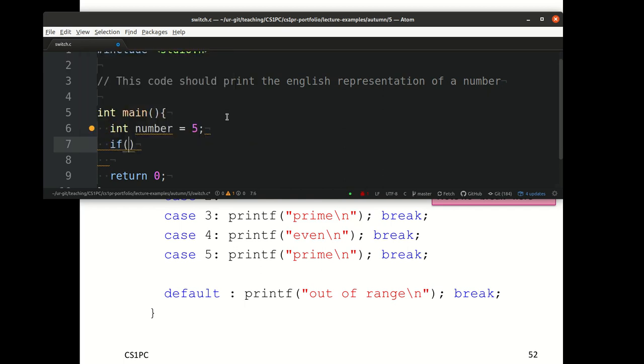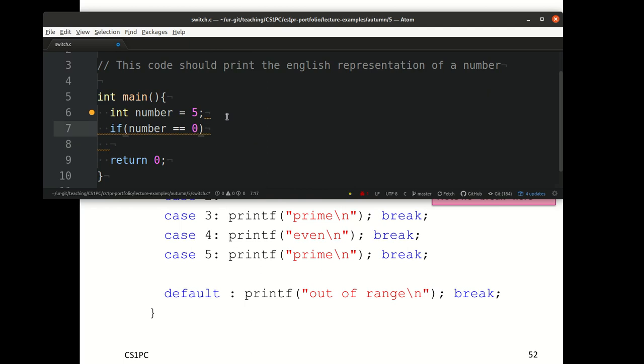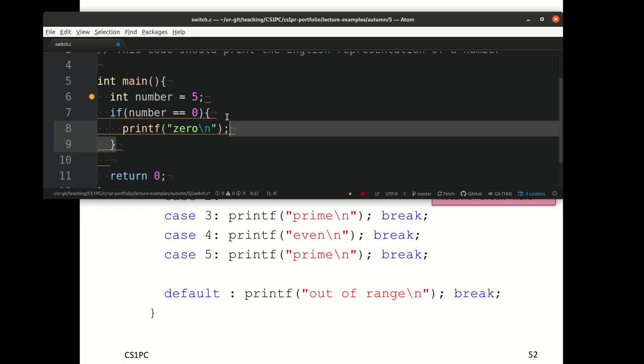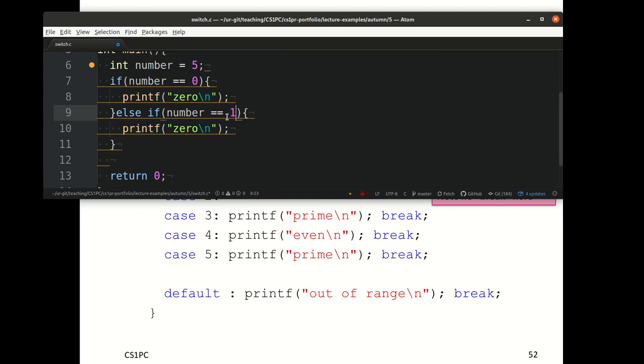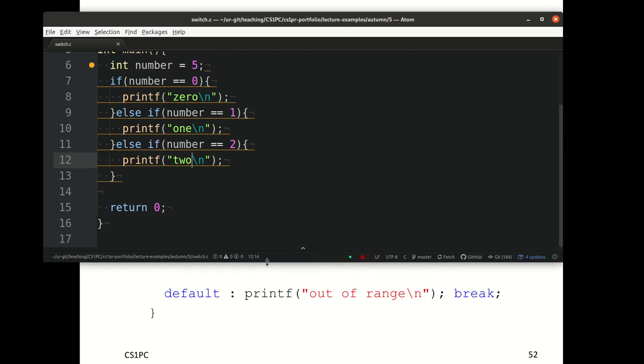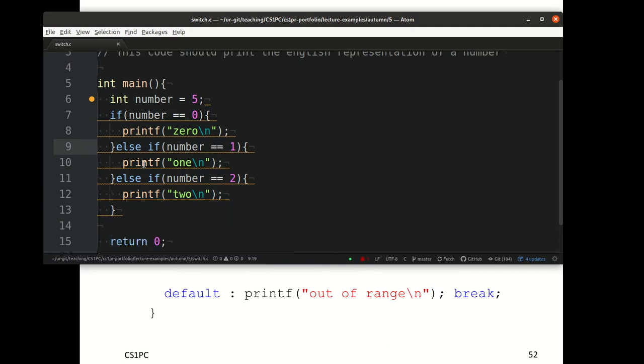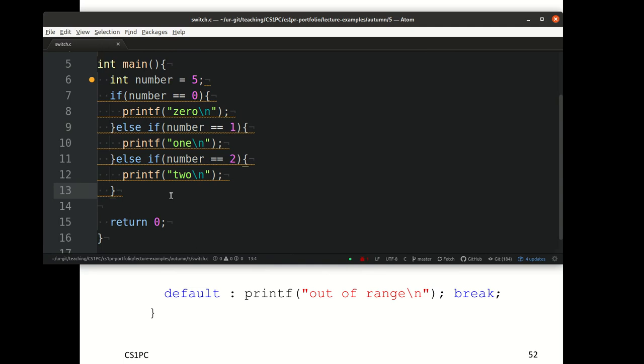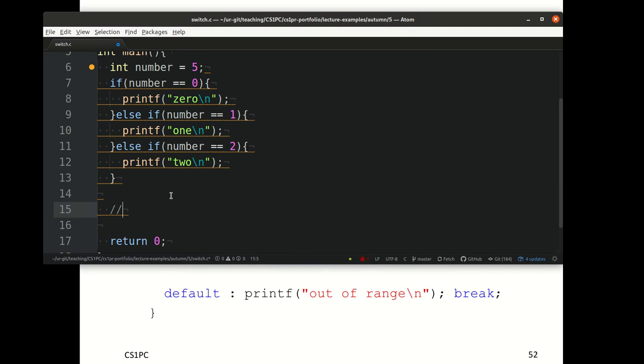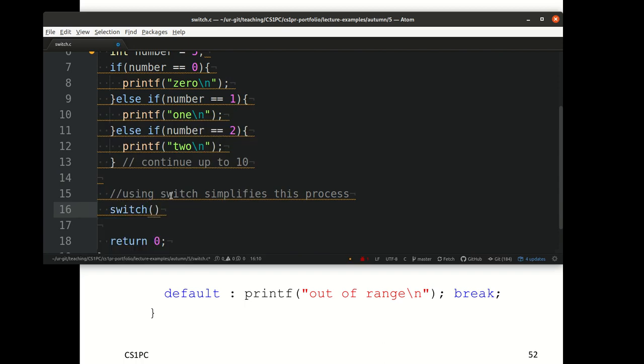We can do this easily by saying if number is 0, printf 0. If the number is 1, print 1. And so on. I could do this and it will work, but it will be very cumbersome. Using switch simplifies this process.